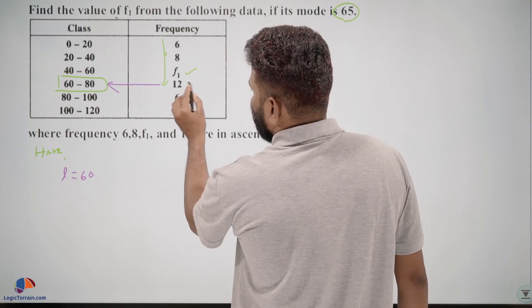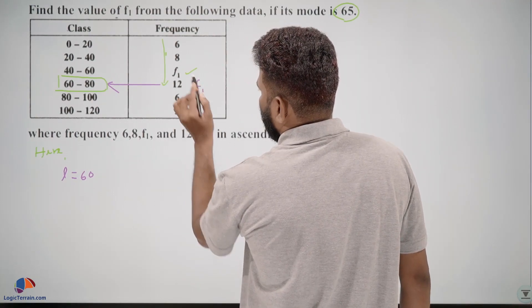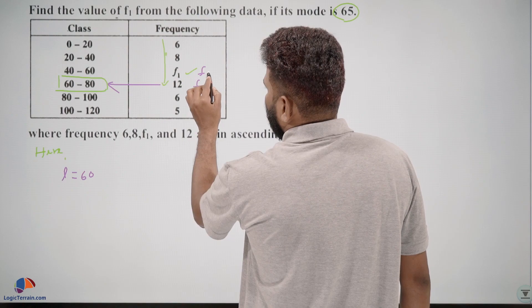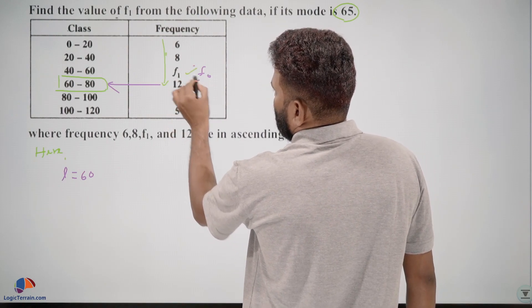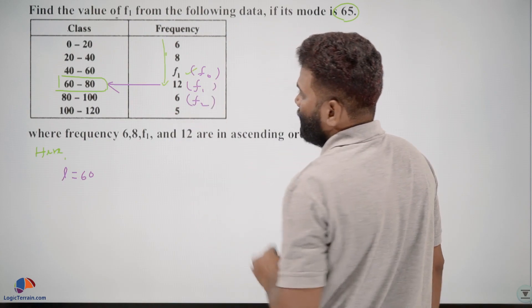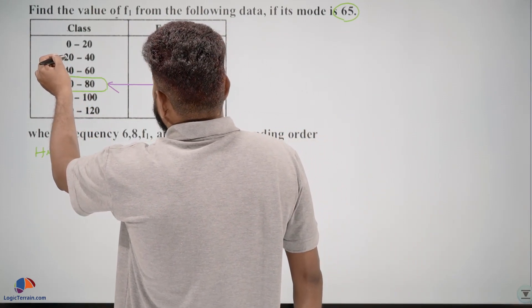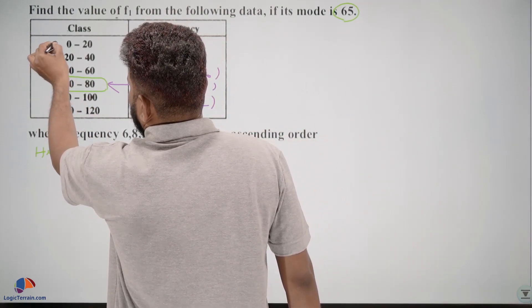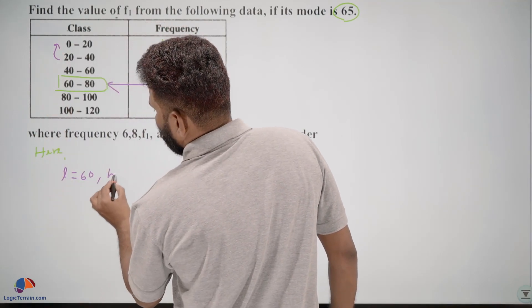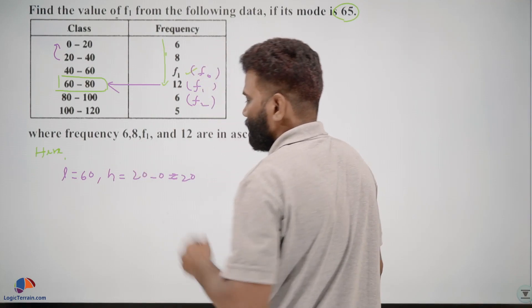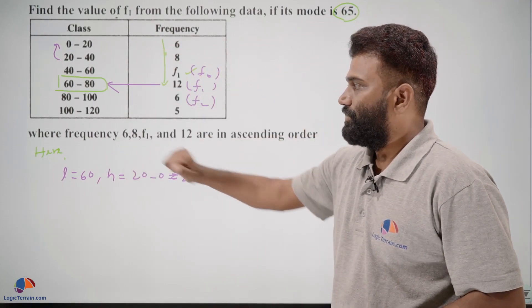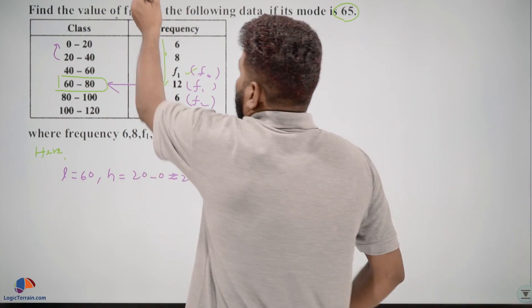And this is f1, and the preceding one is f0, this is f2. And h, the length of class interval h, is equal to 20 minus 0, which equals 20. So we got our required information now.